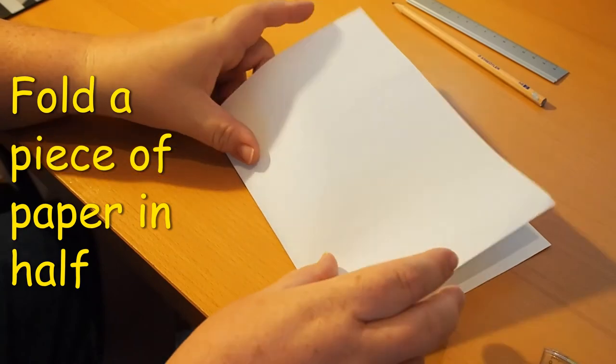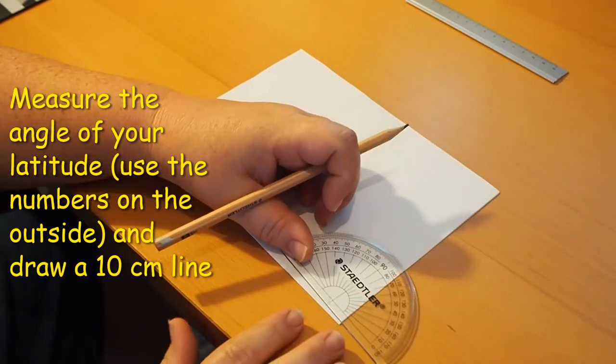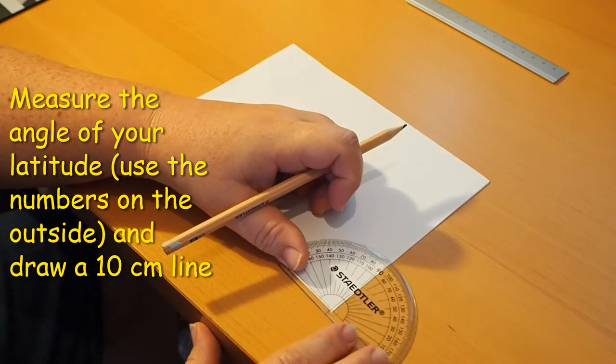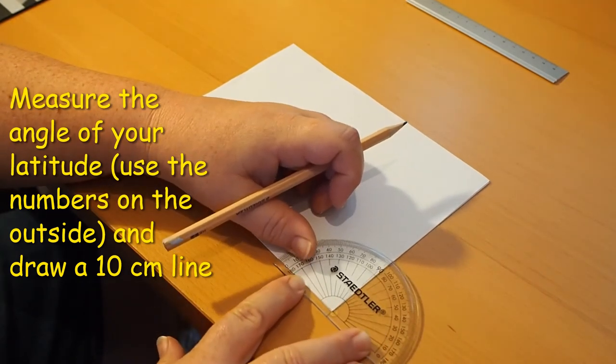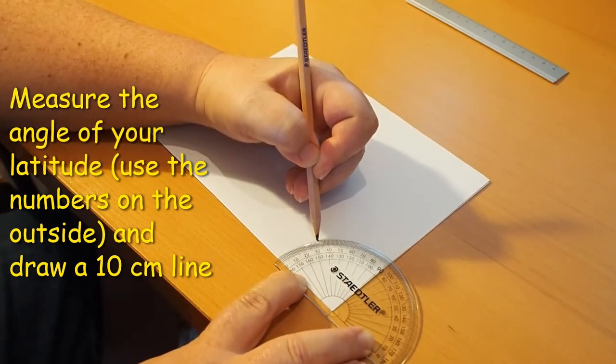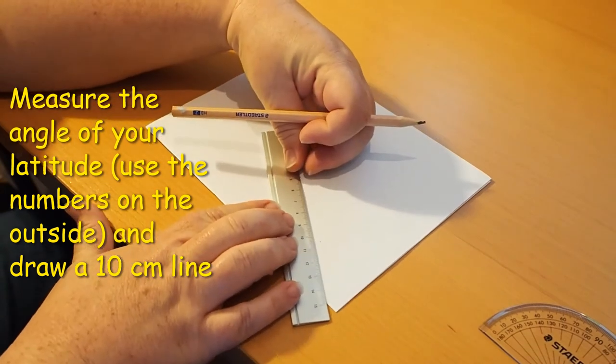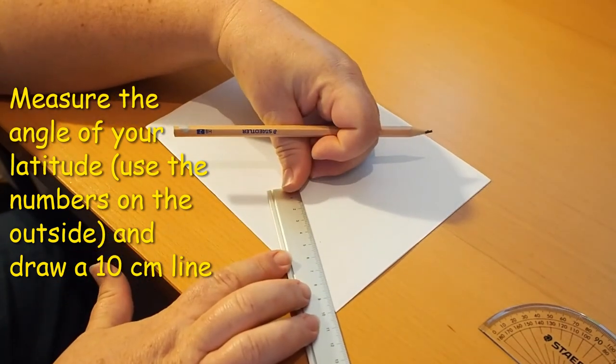To make the gnomon or shadow maker, fold a sheet of paper in half. Put the crosshairs of a protractor on the edge of the page along the fold and measure the angle of your latitude, a dot at 32 degrees for us here in Perth. Draw a line about 10 centimeters long from the corner of the page through the 32 degree dot.